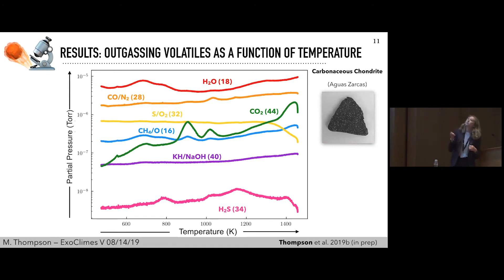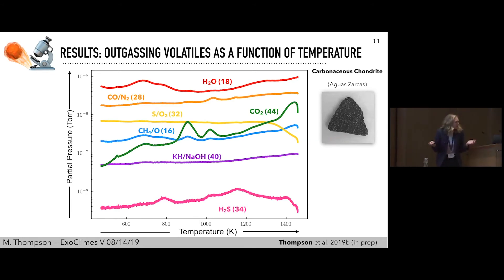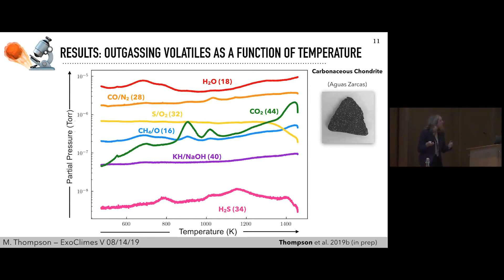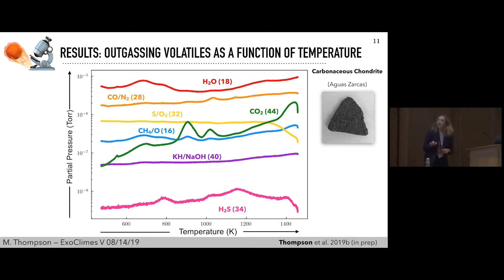Something that might be puzzling is that for some of these gases, we are potentially measuring two different species. The reason is that the mass spectrometer measures things by their mass number, and certain species overlap on the periodic table. For instance, carbon monoxide and nitrogen have the same mass number, which makes it trickier in our analysis to disentangle between the two. That's part of what we are working on to understand the data.